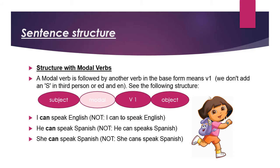Look at the example: 'I can speak English.' Here 'can' is the modal and 'speak' is the verb in its first form — not 'I can to speak English,' that would be wrong. Another example: 'He can speak Spanish' — not 'he can speaks,' adding 's' here would be wrong. 'She can speak Spanish' — not 'she cans,' that would also be very wrong.